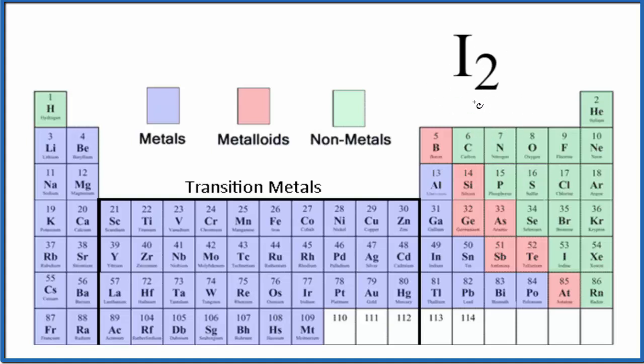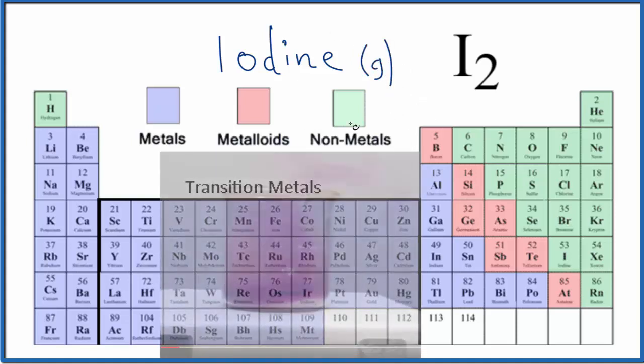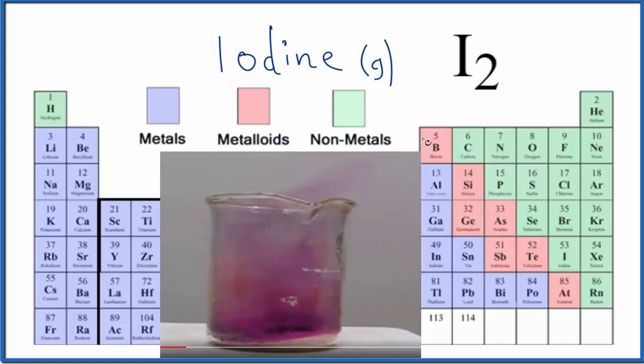So if you see I2, you can call it just iodine. Although you'll want to specify whether it's a solid, put an S like this, or if it's a gas. And iodine gas is this really interesting looking purple color.